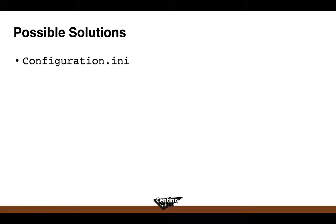Now let's look at possible solutions for automating SQL Server installations. First is configuration.ini — since SQL Server 2005, there has been an automated way to install SQL Server via the command line with the SQL Server installation manager. You can specify all configuration parameters for your install and basic configuration. However, the scope is limited to just that installation and basic configuration tasks; there are other best-practice settings on the Windows host and inside the SQL Server instance that are outside configuration.ini's scope.